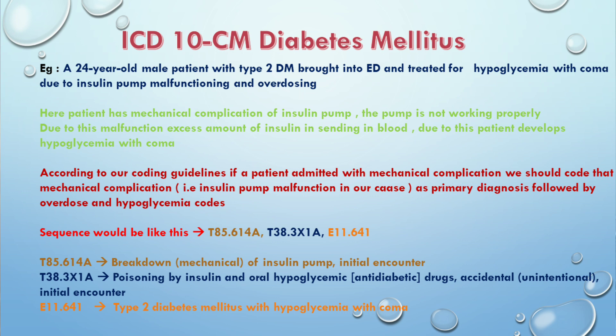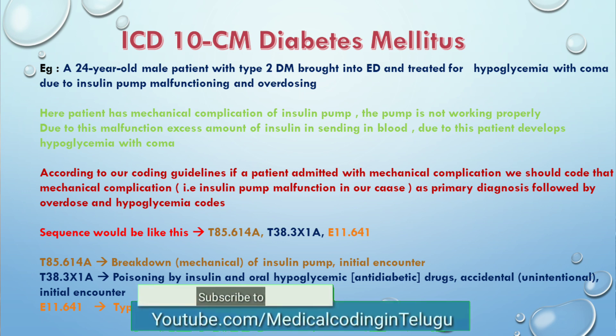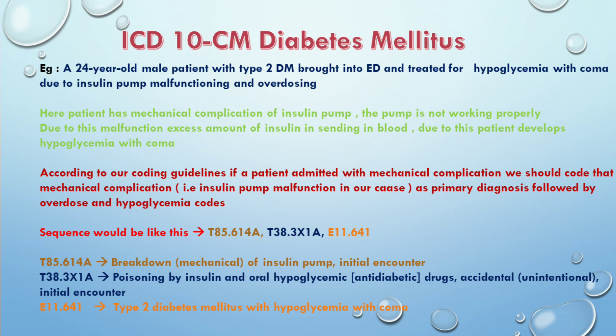T85.614A is breakdown of insulin pump, initial encounter — this is the mechanical complication, reported as the primary diagnosis. T38.3X1A is poisoning by insulin and oral hypoglycemic drugs, accidental, initial encounter — this is the secondary diagnosis. E11.641 is type 2 diabetes mellitus with hypoglycemia with coma — reported as the additional diagnosis.